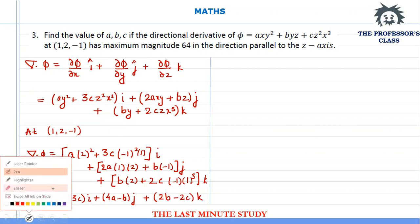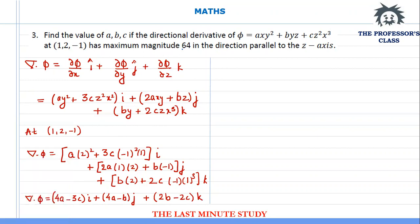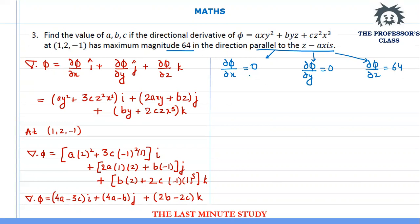Now we have the directional derivative at the given point. The question states it has a maximum magnitude of 64 in the direction parallel to the z-axis. Direction parallel to z-axis means del phi by del x = 0 and del phi by del y = 0, while del phi by del z is maximum and equals 64. This gives three equations: 4a + 3c = 0, 4a - b = 0, and 2b - 2c = 64.